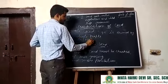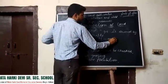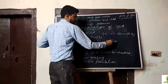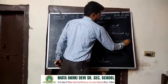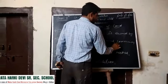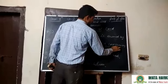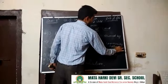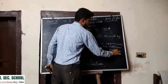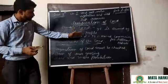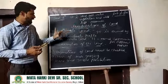Next point is community land. Community land is owned by the community for different purposes. We talked about the classifications of the land.